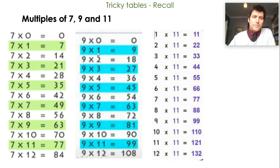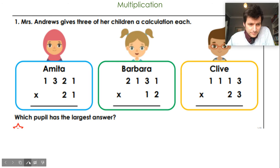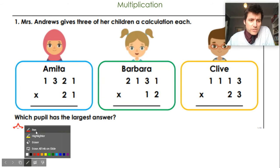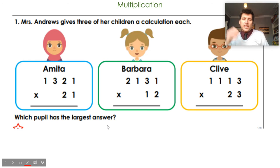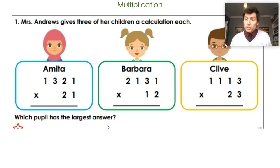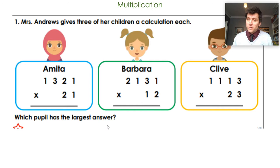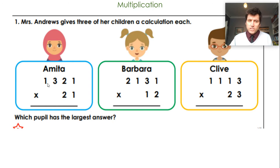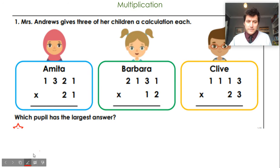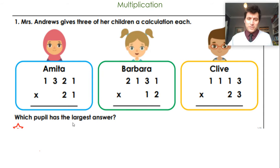Right, we're thinking with these next questions about which of these has the largest answer. To do this you basically need to do the calculations. Pause the video and work through — if you're not sure, go through with me. So first we'll look at Amitra's calculation: one thousand three hundred and twenty-one multiplied by twenty-one.